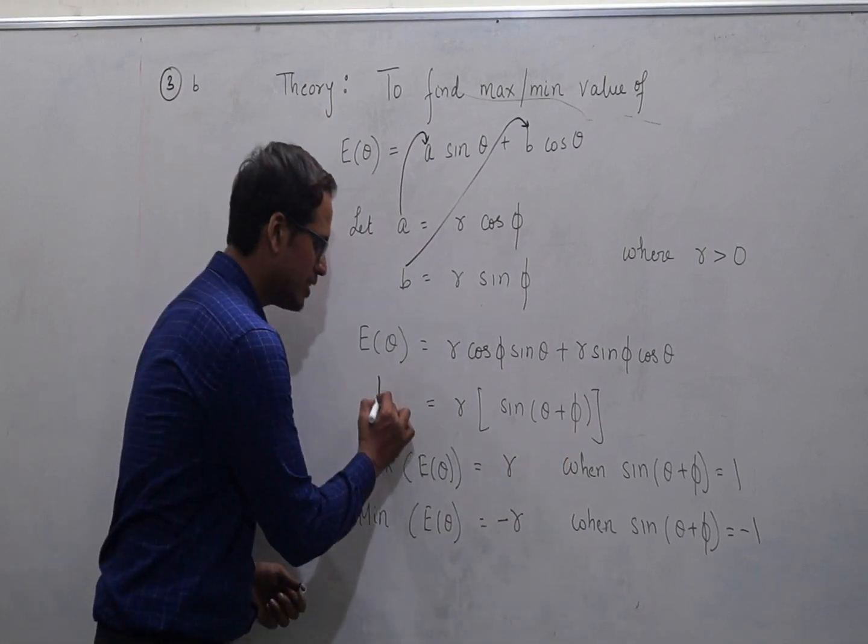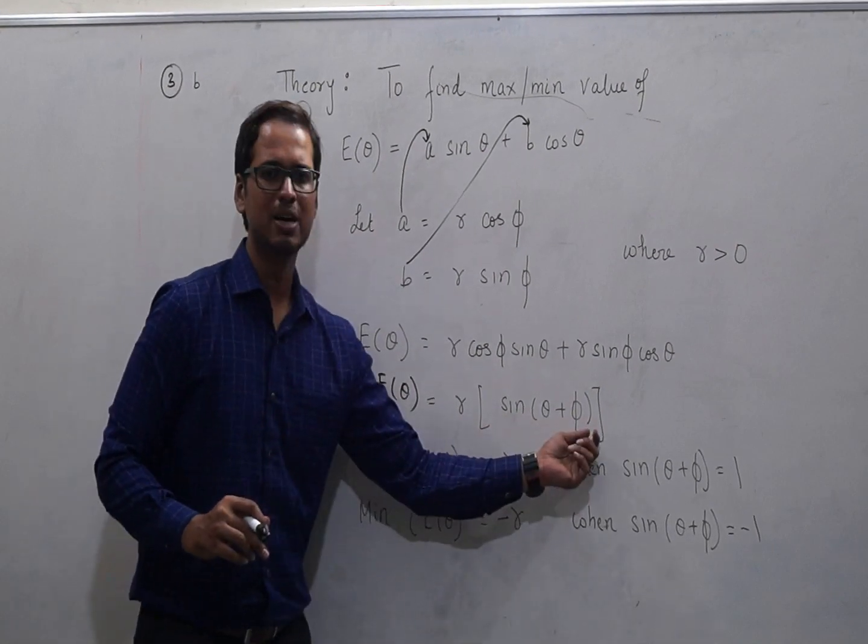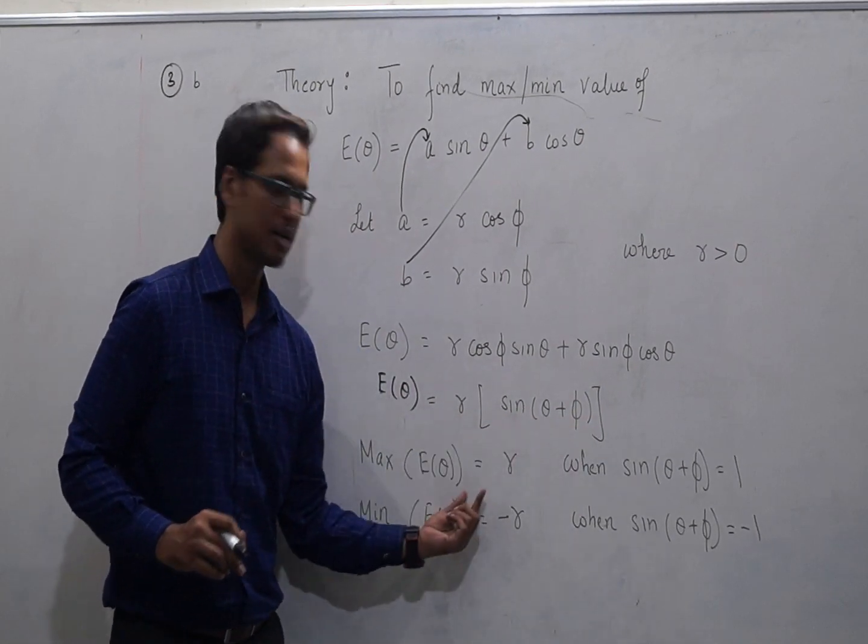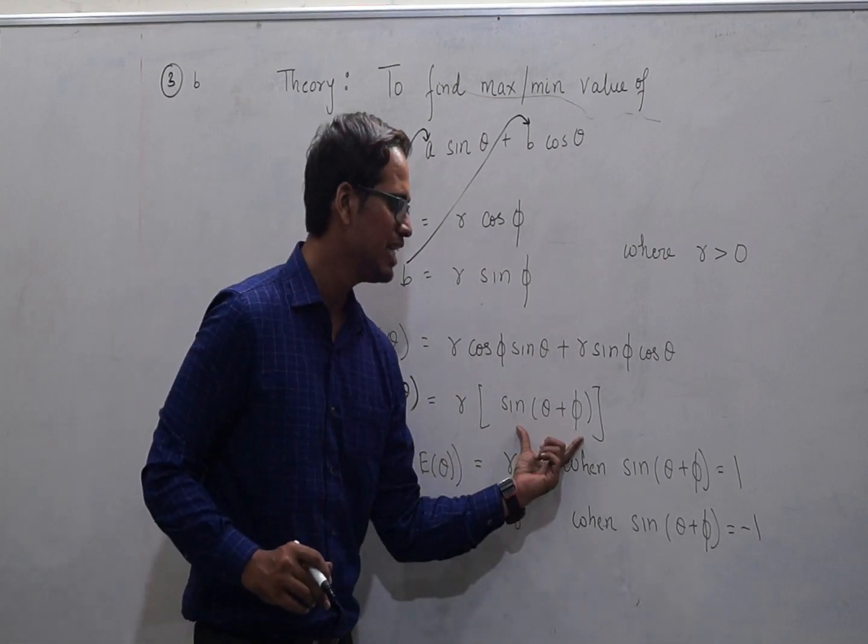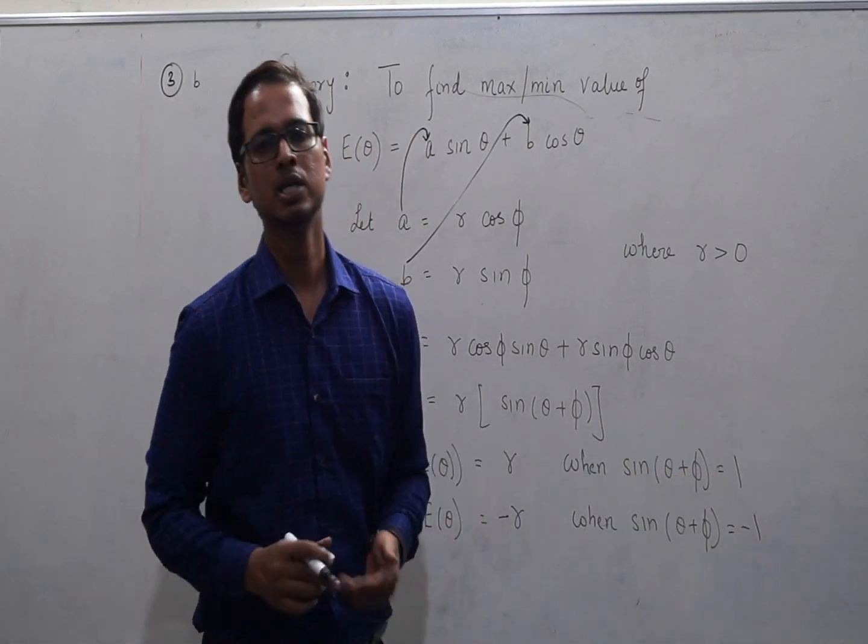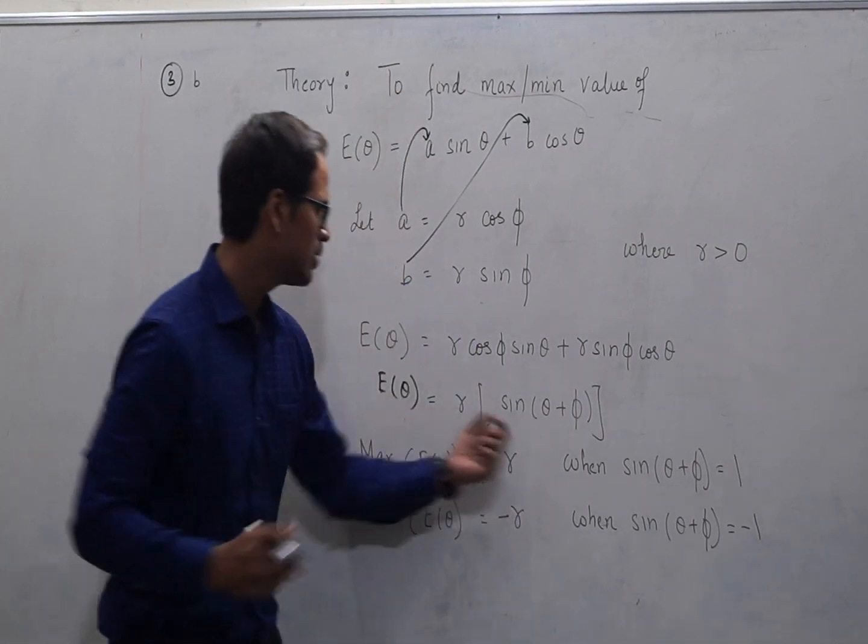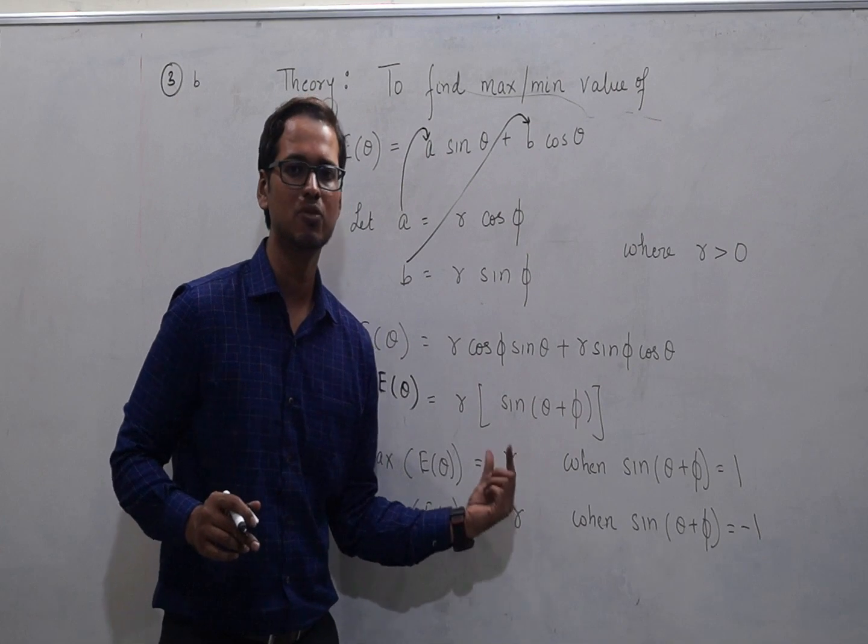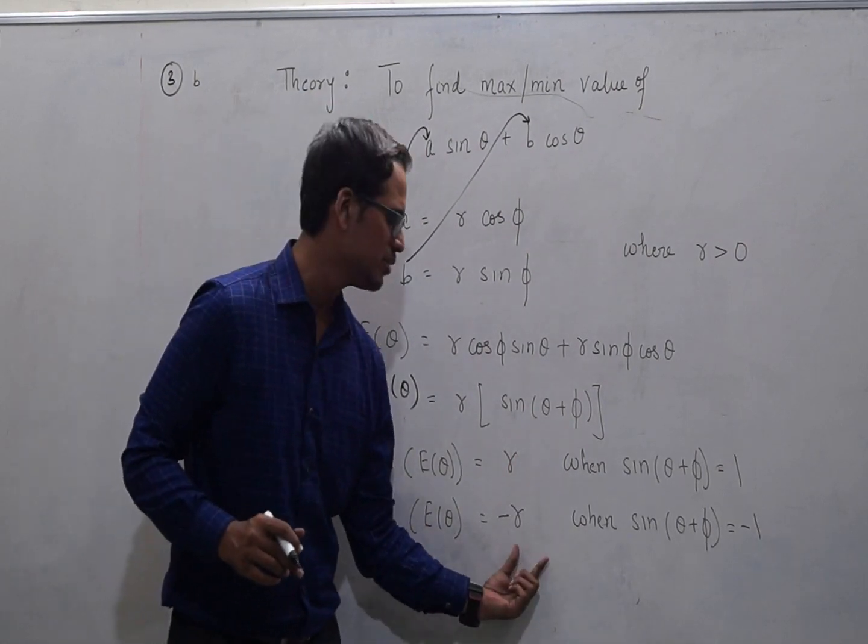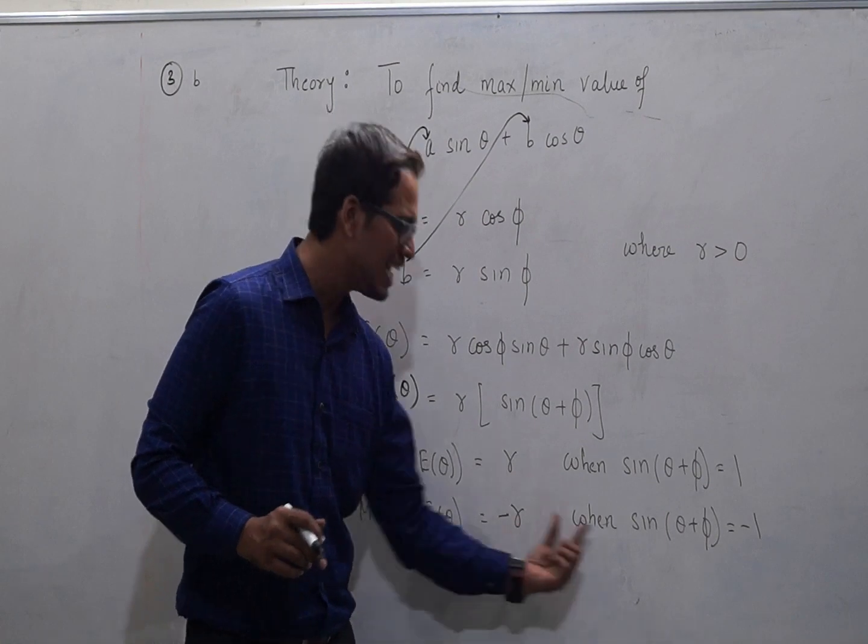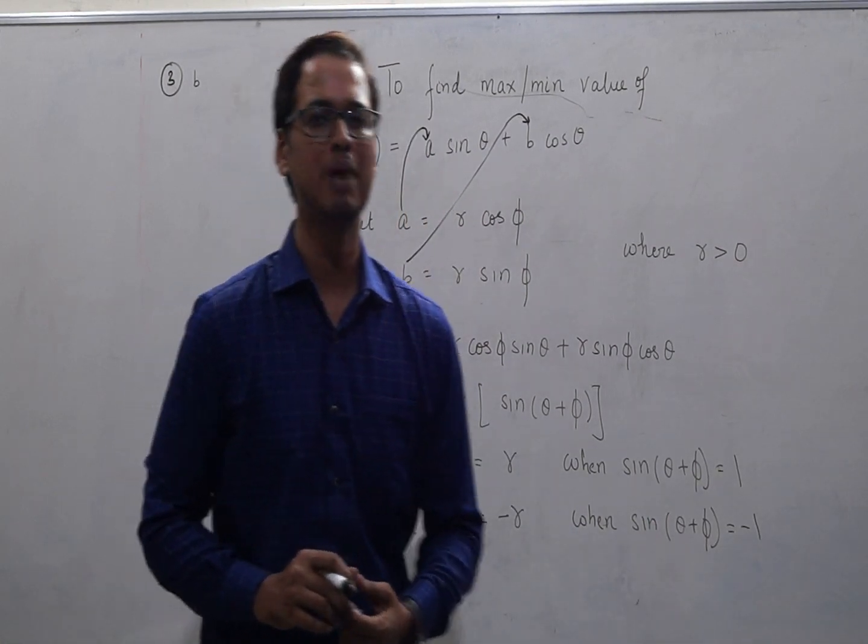Now, if you see this expression of E theta, you would realize that this expression can take a maximum value of r. And when will that happen? That will happen when your sine of theta plus phi becomes 1. We all know sine function can take a maximum value of 1. Whereas, the minimum value for this expression will be minus r. And that happens when sine of theta plus phi becomes equal to minus 1.